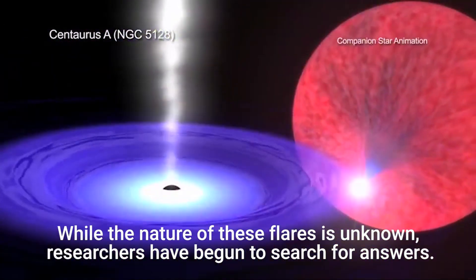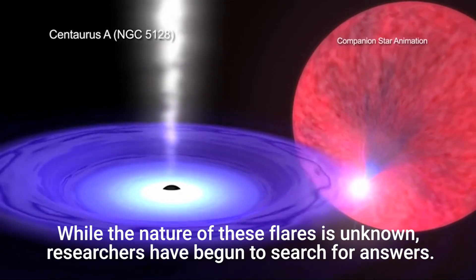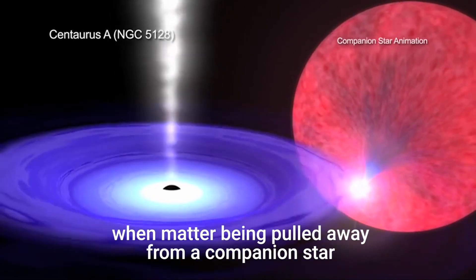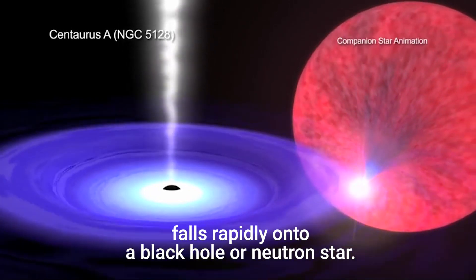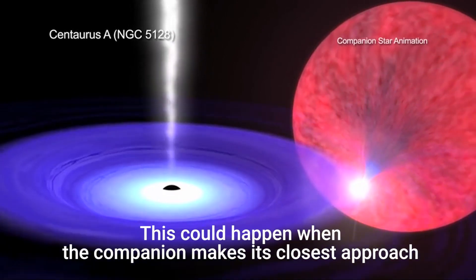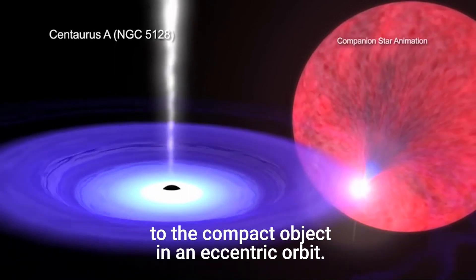While the nature of these flares is unknown, researchers have begun to search for answers. One idea is that the flares represent episodes when matter being pulled away from a companion star falls rapidly onto a black hole or neutron star. This could happen when the companion makes its closest approach to the compact object in an eccentric orbit.